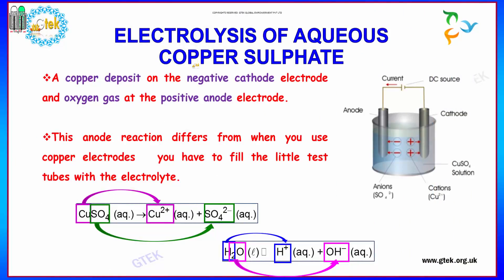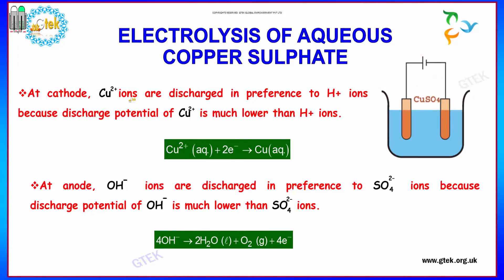For electrolysis of aqueous copper sulfate, copper deposits on the negative cathode and oxygen forms at the positive anode. This anode reaction differs when copper electrodes are used. The electrolyte is copper sulfate, with sulfate as the anion and copper as the cation in water solution. Cu2+ ions are discharged in preference to H+ ions because the discharge potential of Cu2+ is much lower than H+. At the anode, OH- ions are discharged in preference to sulfate ions, because the discharge potential of OH- is much lower than that of sulfate ions.